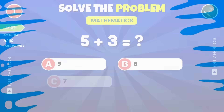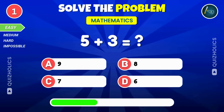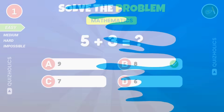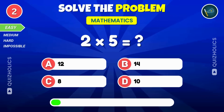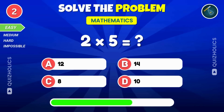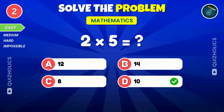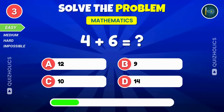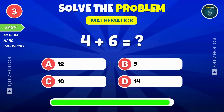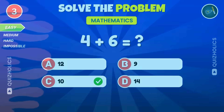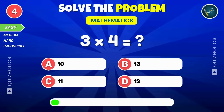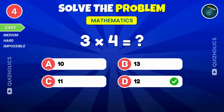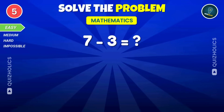Starting with easy ones! What is 2 times 5? What is 4 plus 6? What is 3 times 4? What is 7 minus 3?